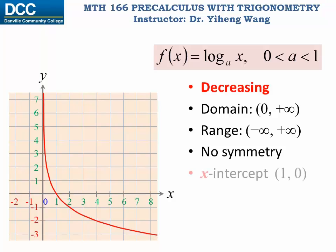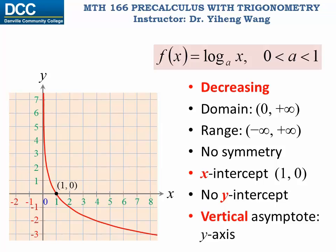There's no symmetry. They have the same x-intercept, one zero. No y-intercept, and also it has a vertical asymptote, which is the y-axis.